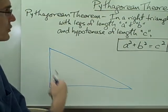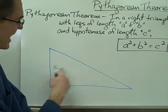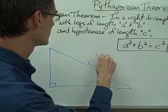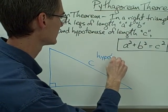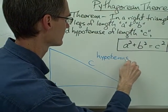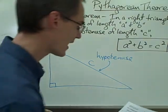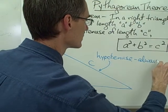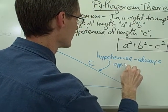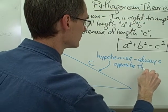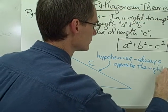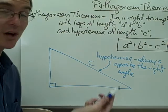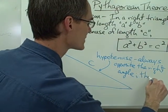Here we have a right triangle. The most important side in the right triangle is really this side here, which is the hypotenuse. We're going to call this side C. The hypotenuse is always opposite the right angle in a right triangle, and it's also always the longest side.